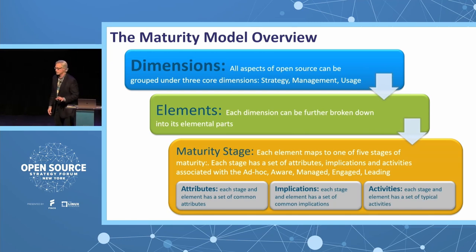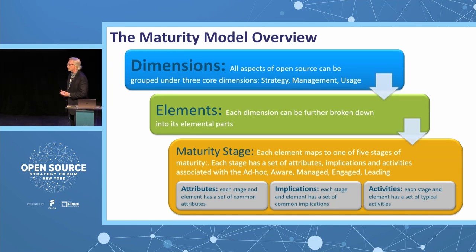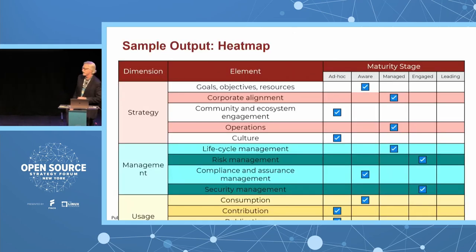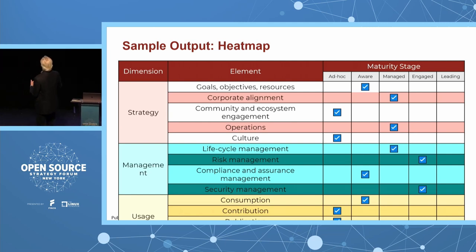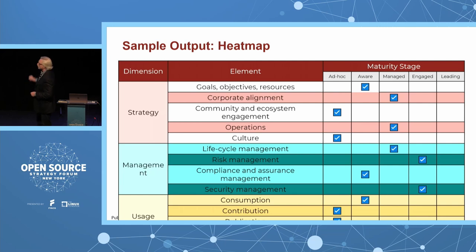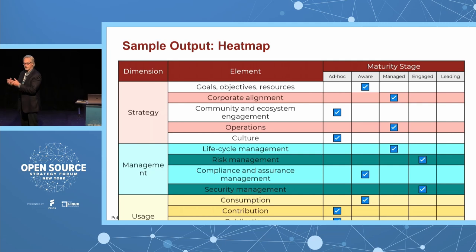Remember, this is beta — everything has been pushed just this week and we're evolving it as we go. Please don't judge us on the UI; we are working on that and will continue to evolve it rapidly. This is a heat map output of the model. You can see where, based on the questions you answered around goals and objectives, you are at the aware stage. You can double-click on that and out comes a listing of the attributes, the implications, and the activities to get from aware to managed.